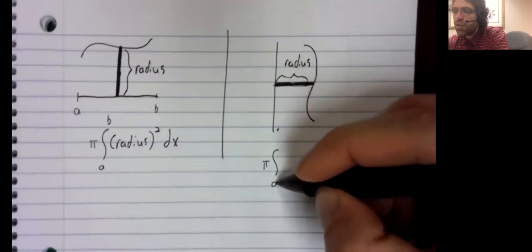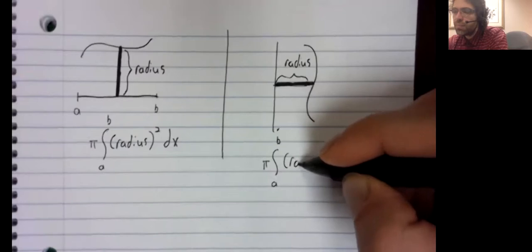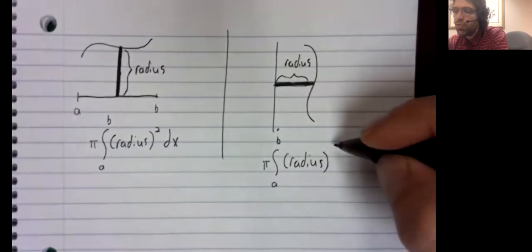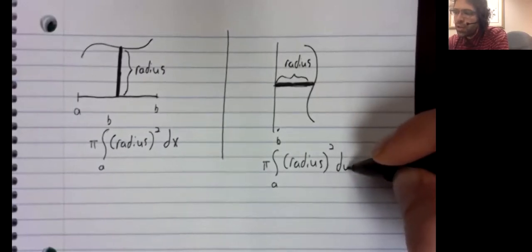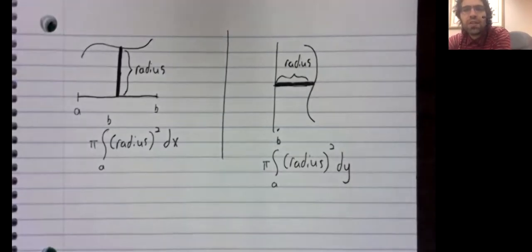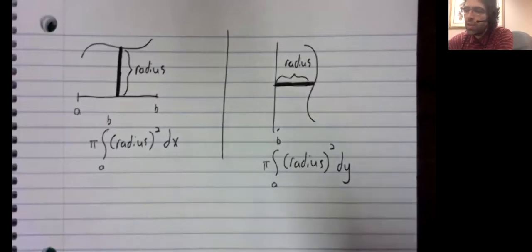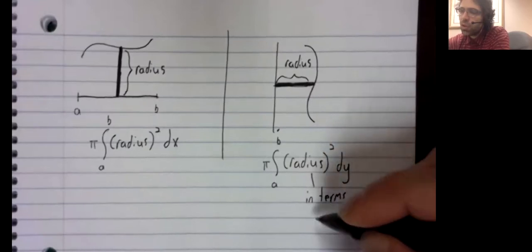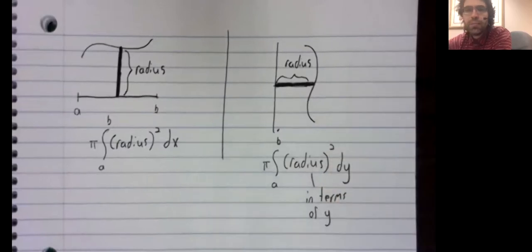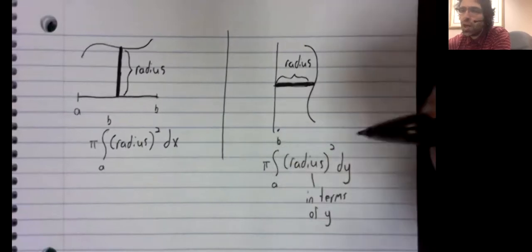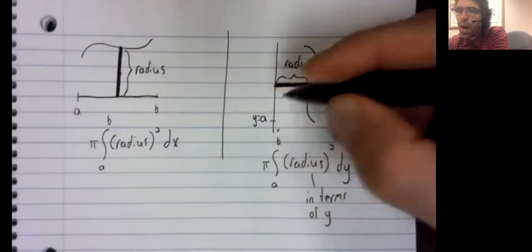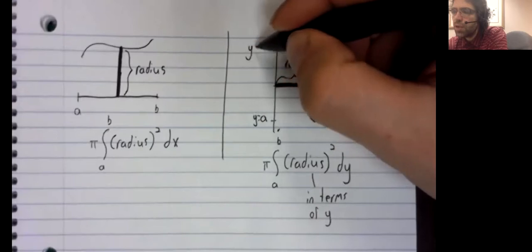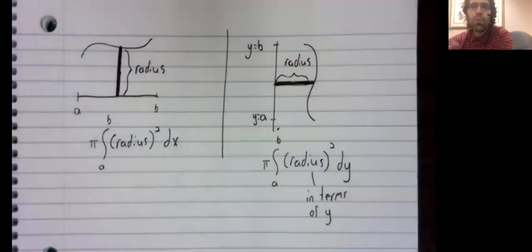And the volume of the solid of revolution is still with the integral of the radius squared, dy now instead of dx. We saw this same thing when we used horizontal rectangles to find areas. So in particular, this radius has to be in terms of y. And these limits of integration are y values from y equals a to y equals b.